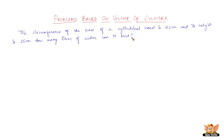The question reads like this. The circumference of the base of a cylindrical vessel is 132 cm and its height is 25 cm. We need to find out how many liters of water can the vessel hold.